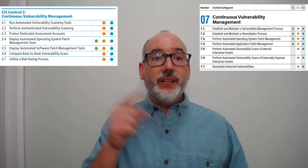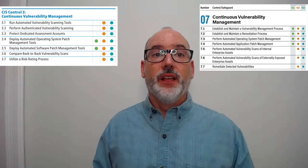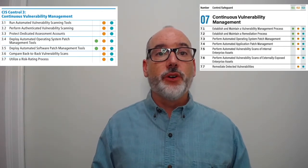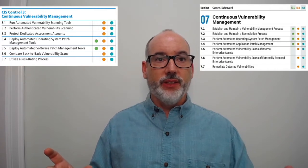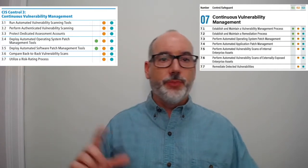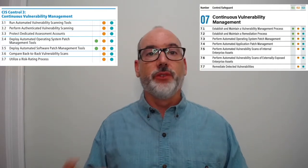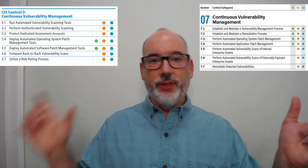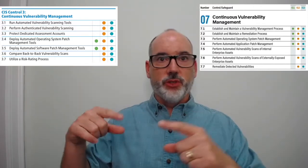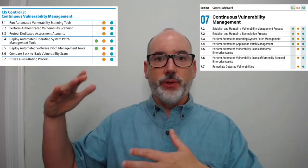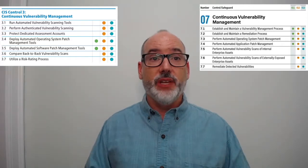Safeguards 7.5 and 7.6 define vulnerability scans of internal and external facing assets respectively. These are split because many industry regulations and audits require one, the other, or both, so we want both accounted for separately — and also to have one safeguard per ask.